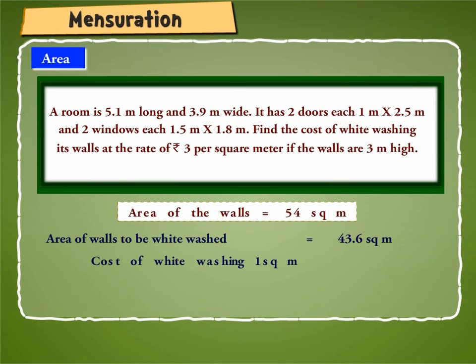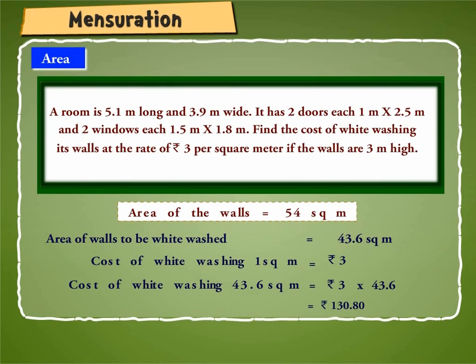Cost of whitewashing 1 square meter is equal to rupees 3. Cost of whitewashing 43.6 square meter is equal to rupees 3 into 43.6, which is equal to rupees 130.80.